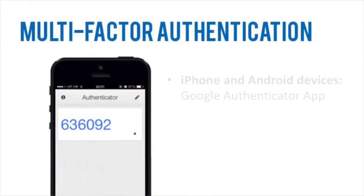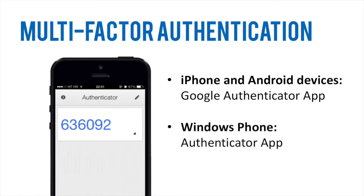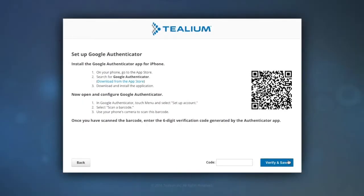To get started, you'll need the Google Authenticator app. If you don't have it on your phone already, you can download it from your phone's app store. With the Google Authenticator app, you'll be able to connect your Telium account by scanning the QR barcode that appears on your screen and entering the six-digit code generated by the app.